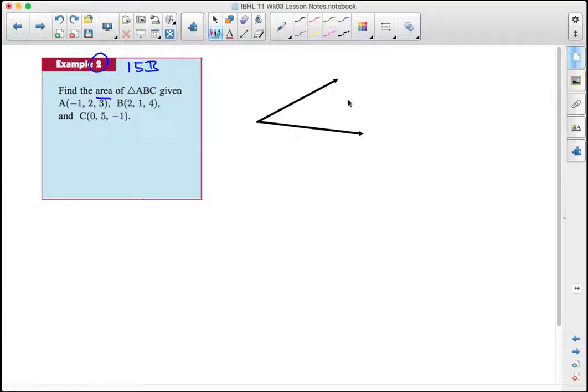Now I've drawn two vectors here because we're going to use vector methods to find the area. And we'll say that this is point A. This is just a schematic drawing. That's going to be point A, this is point B, and here we have point C, which means that the vectors that we have are vector AB and vector AC.